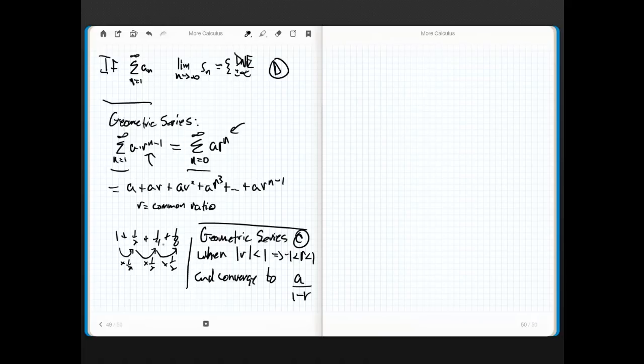So if you think about it, if I take this guy right here, let's rewrite it and let's prove that it converges to 2 really quickly. If I take the sum as n goes from 1 to infinity...